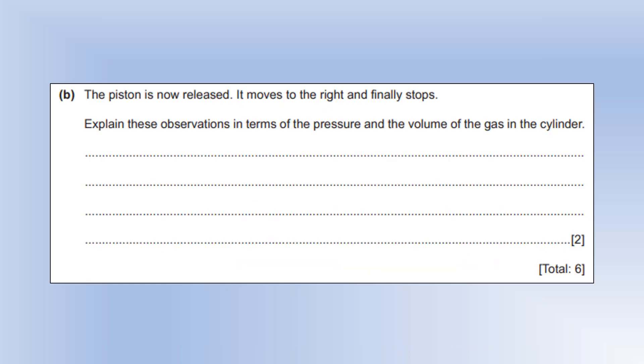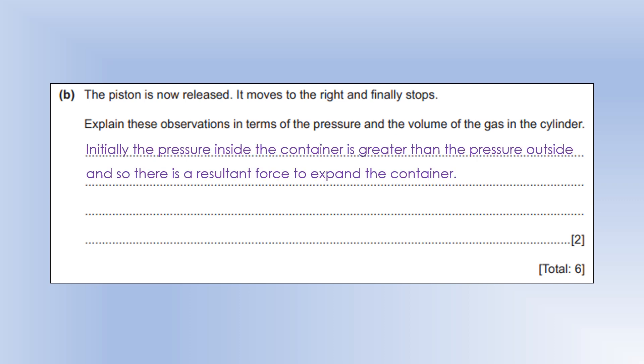The piston is now released. It moves to the right and finally stops. Explain these observations in terms of the pressure and volume of the gas. Initially the pressure inside the container is going to be greater than the pressure outside. So there's going to be a resultant force to expand the container. The container will then expand until the pressures are equal because as the volume increases, the pressure inside decreases and you're waiting until you get to the point where the two pressures are equal and the resultant force is now zero.